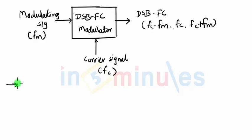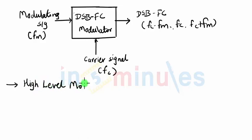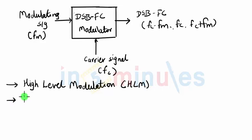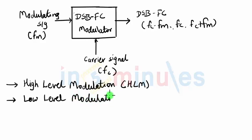The first type of transmitter we will study is called high level modulation, also known as HLM. The second type is called low level modulation, also known as LLM. Let us now understand what high level and low level modulation mean.